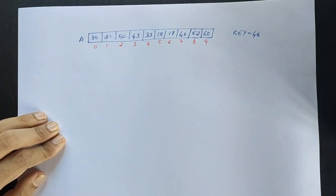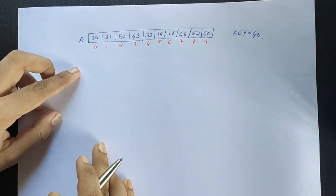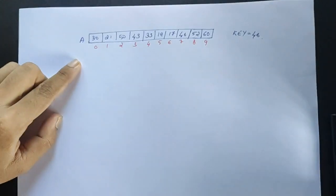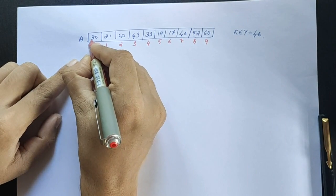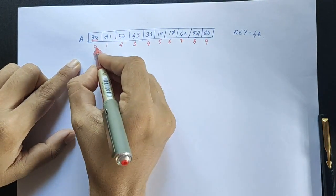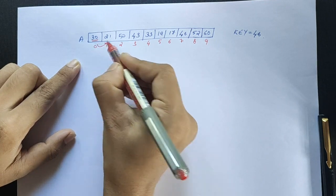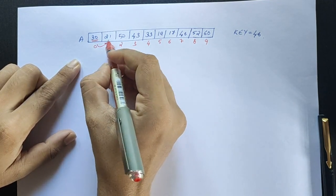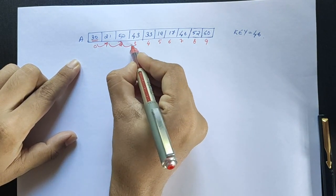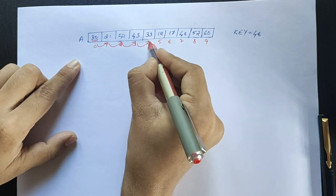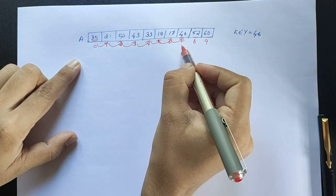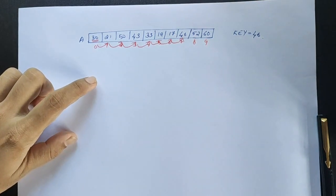We print the index of the found item. The first element is the 0th element. If the 0th element is not matching to the key, we proceed to the next element, the next position. If that element doesn't match, we proceed to the next element.